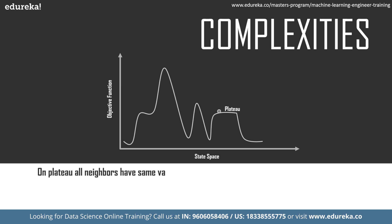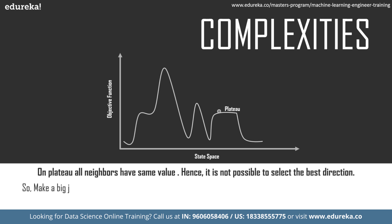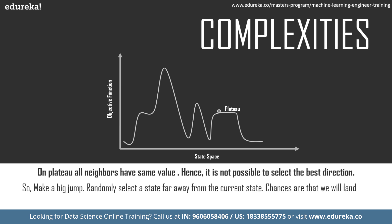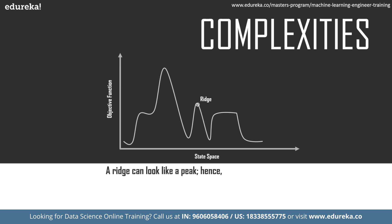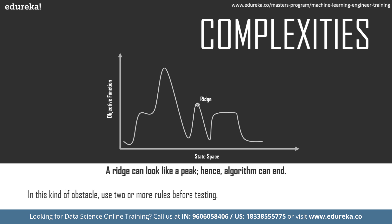On a plateau, all neighbors have the same value, making it impossible to select the best direction. To overcome this, make a big jump — randomly select a state far away from the current state, and chances are you will land in a non-plateau region. For a ridge, movement in all possible directions is downward, so the algorithm stops. To overcome this, use two or more rules before testing, moving in several directions at once to find the best.